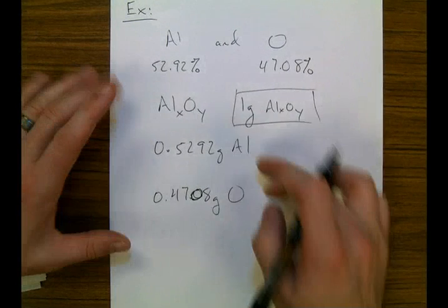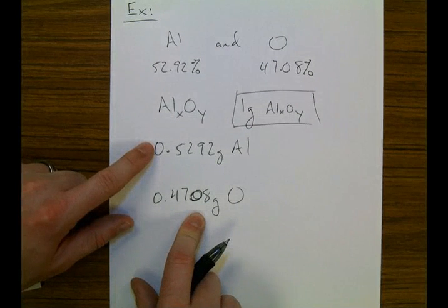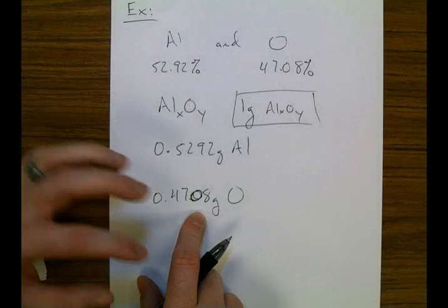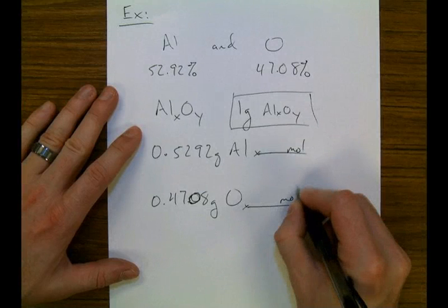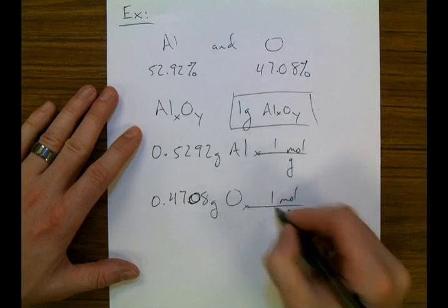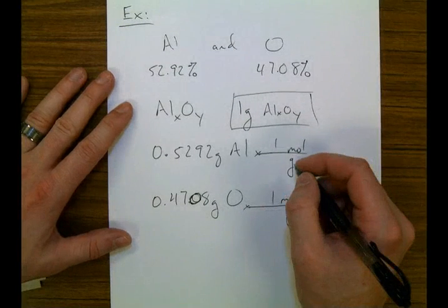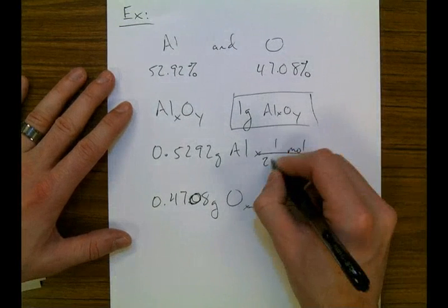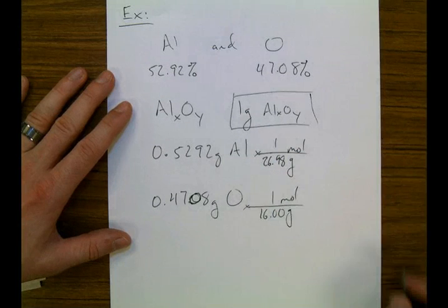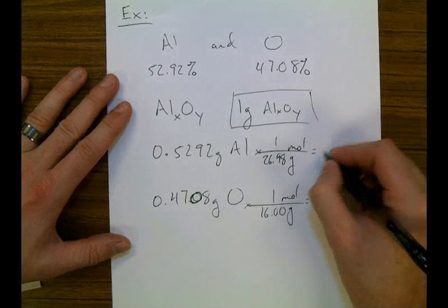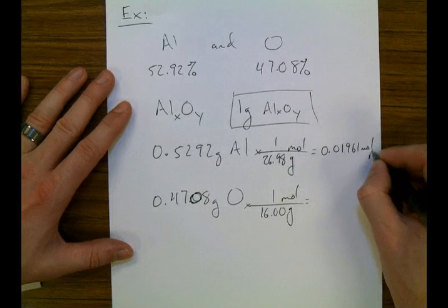Now, the first step to figure out how much of each — we don't know how much we have, we know how heavy. And remember, how heavy is not how many. So we have to convert our grams into a quantity. The quantity we use in chemistry are moles. So I'm going to convert to moles and cancel out the grams. The molar mass for aluminum I look up on the periodic table and it is 26.98, and for oxygen it's 16.00. I find that I have 0.01961 moles of aluminum.